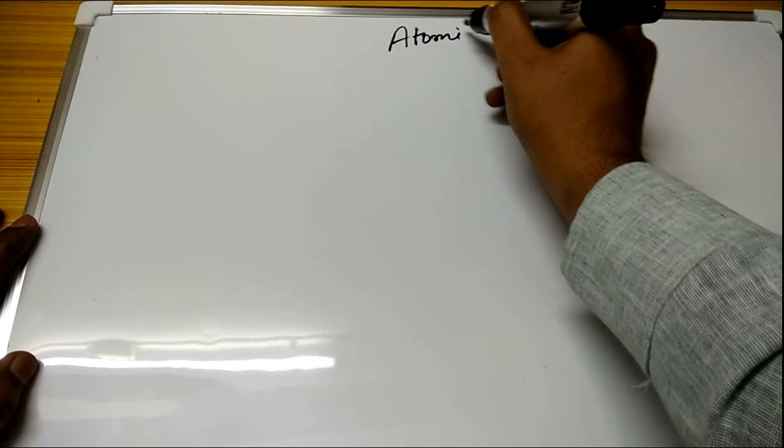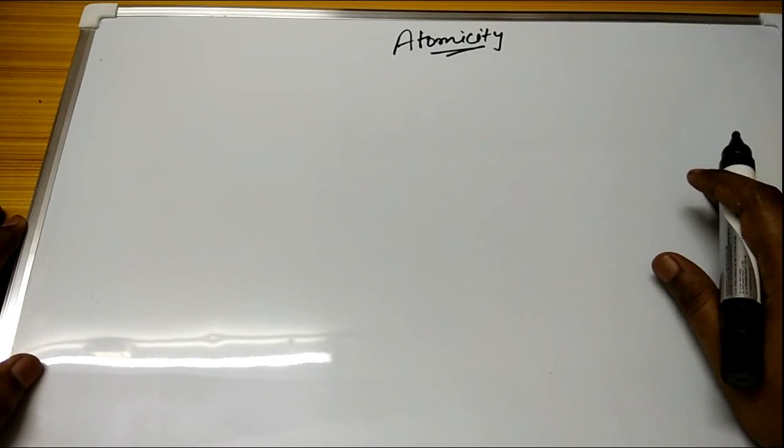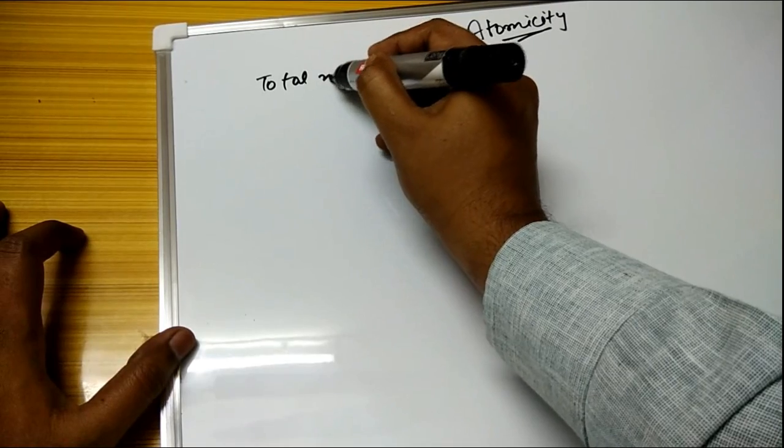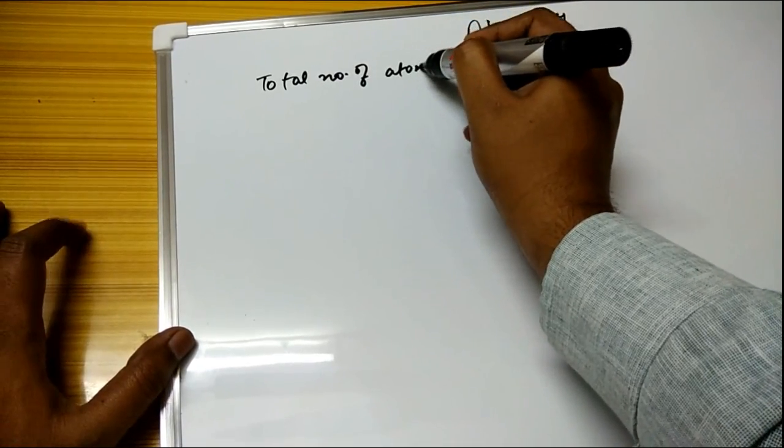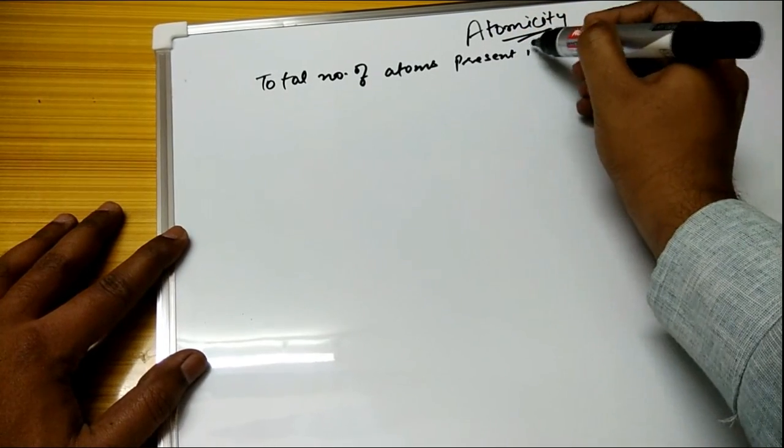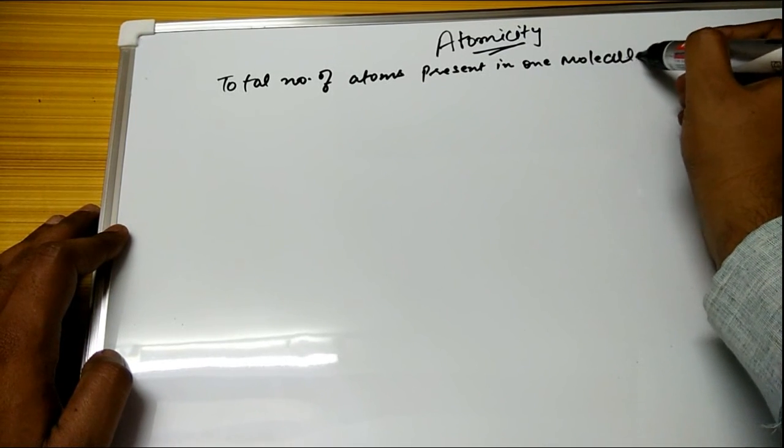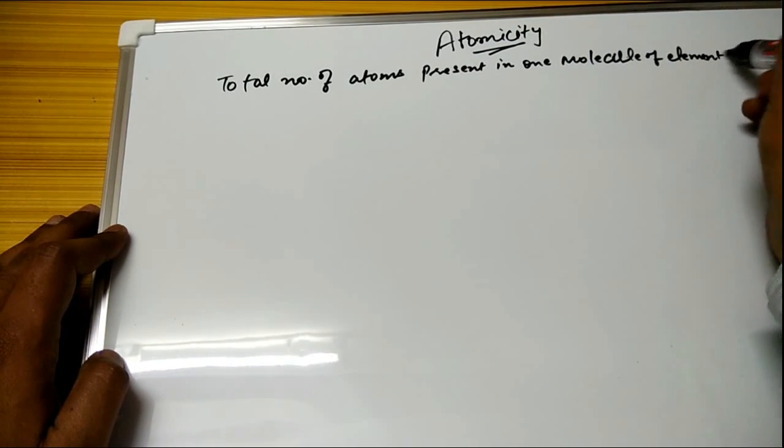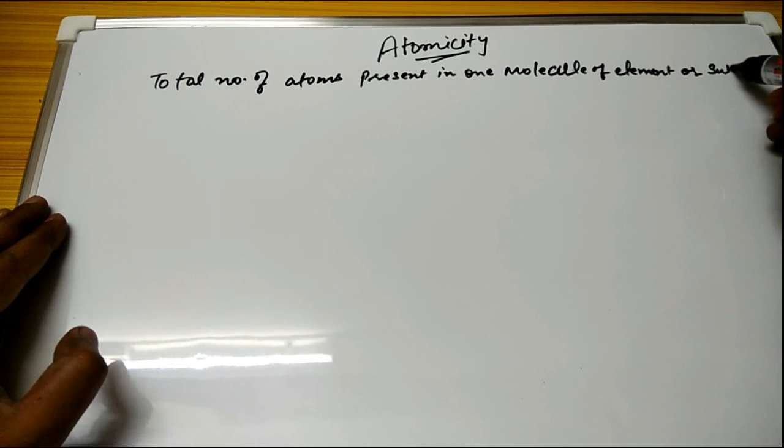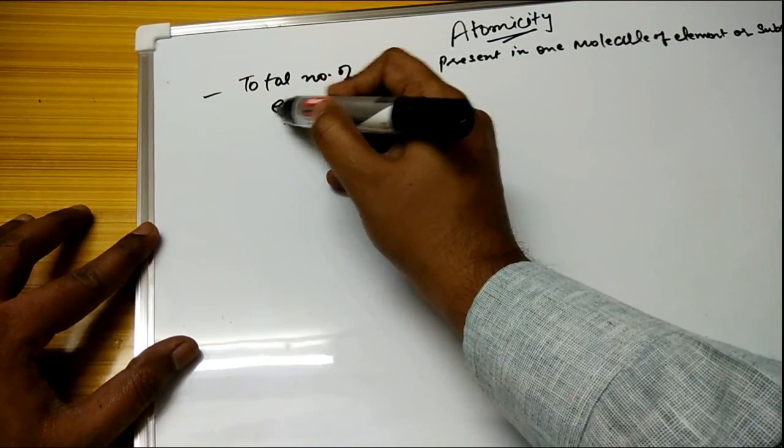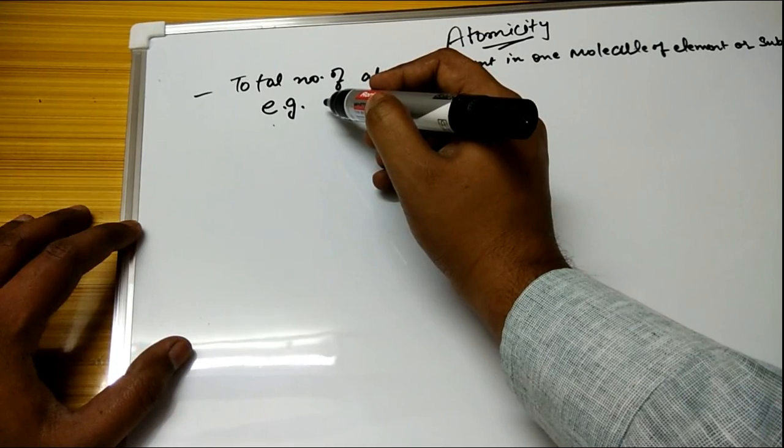Hello friends, welcome to Ravi Academy. Once again, today our topic is atomicity. Now what is atomicity? We need to understand it first by the definition. The definition is: total number of atoms present in one molecule of element or substance.